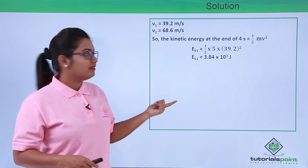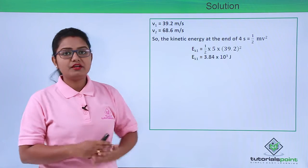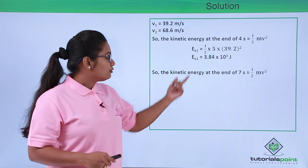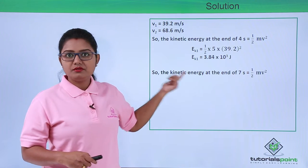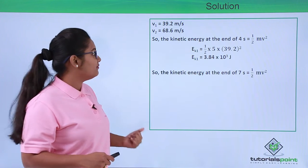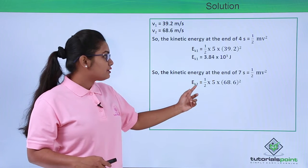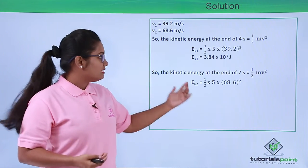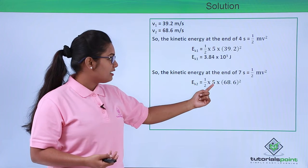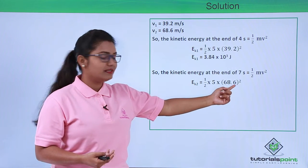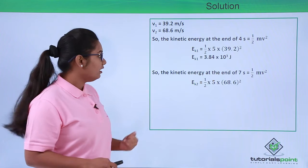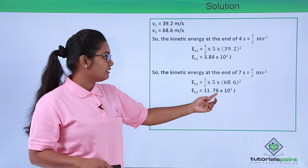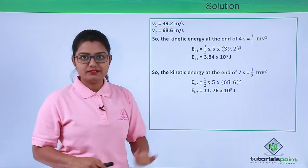In the same way we can calculate the kinetic energy of the body at the end of 7 seconds. Using the same formula, half mv squared, Ek2 equals half multiplied by 5 multiplied by 68.6 squared. On evaluating this, Ek2 equals 11.76 × 10³ joules.